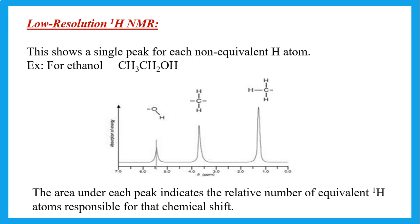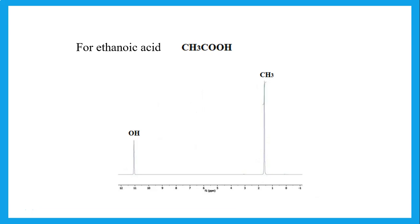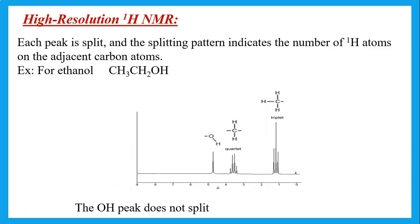For ethanoic acid, there are only two types of protons: the OH proton of the acid, and the hydrogens of the CH₃ group. In high resolution NMR, each peak is split into a number of peaks, and the splitting is determined by how many hydrogens are on the neighboring carbon.